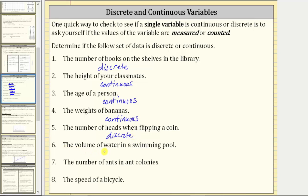Number six, we have the volume of water in a swimming pool. We measure volume, and therefore this is continuous. Number seven, the number of ants in an ant colony. We count the number of ants. This is discrete. And number eight, the speed of a bicycle. We measure speed, and therefore this is continuous.